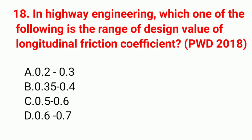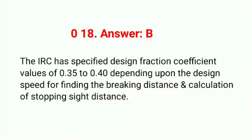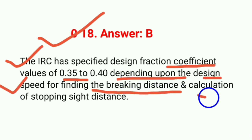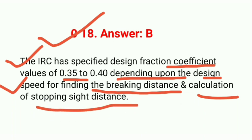Question 18: In highway engineering, what is the range of the design value of longitudinal friction coefficient? Correct answer option B: 0.35 to 0.40. The IRC has specified design friction coefficient values of 0.35 to 0.40 depending upon the design speed, for finding braking distance in calculation of stopping sight distance.